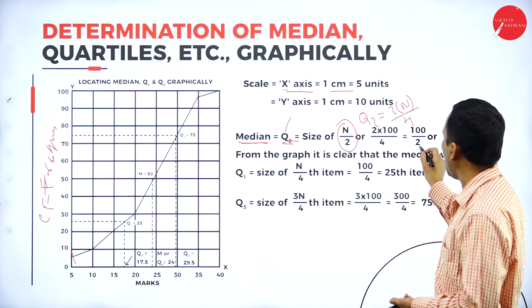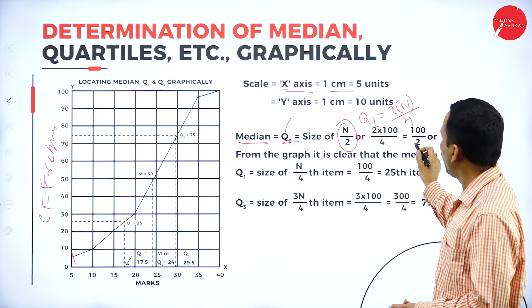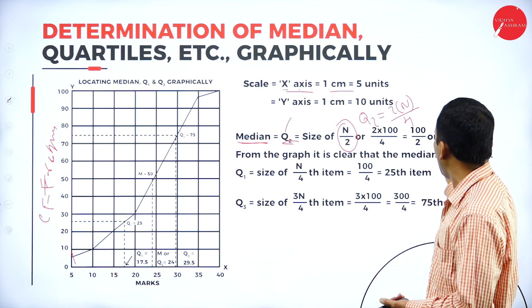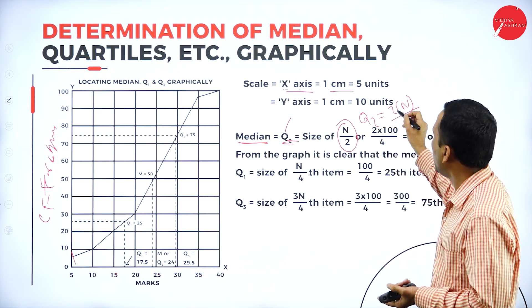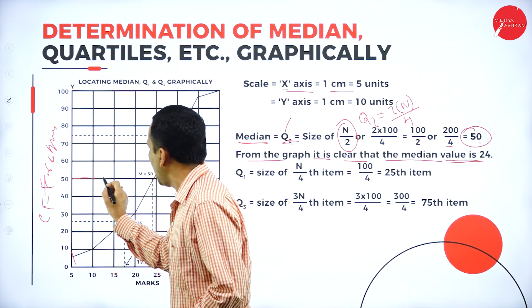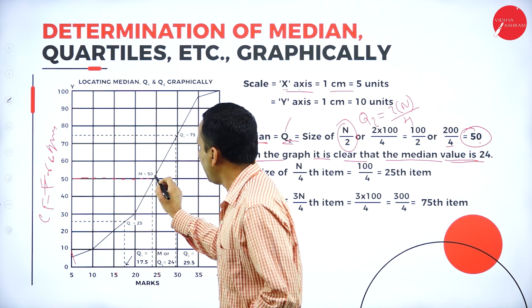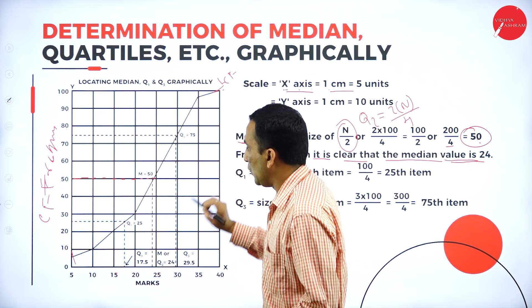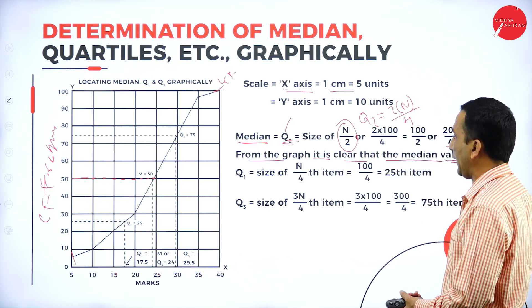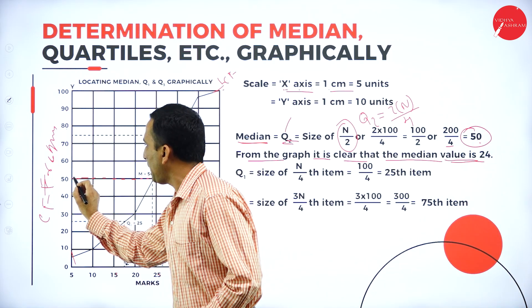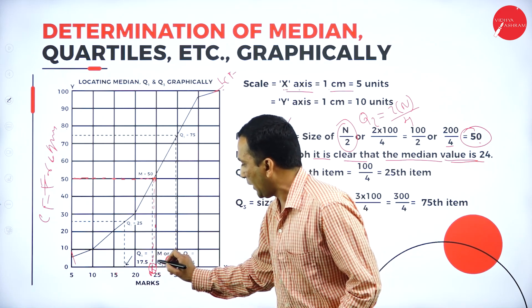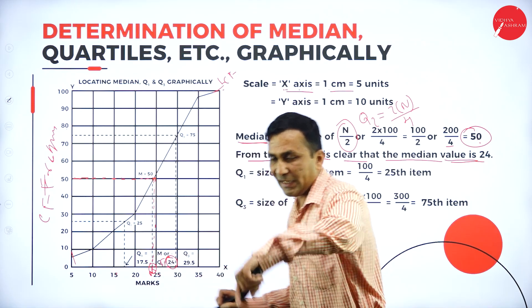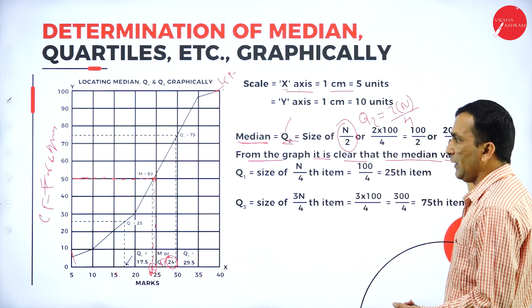The frequency given in the question — I took the total — I am getting n = 100. The first step: when you are doing for median, we need to get the cumulative frequency. I have written the first value 4 as it is. Second: 4 plus 6 = 10, 10 plus 10 = 20, 20 plus 10 = 30, 30 plus 25 = 55, 55 plus 22 = 77, 77 plus 18 = 95, 95 plus 5 = 100. The last value 100 is equivalent to the total frequency.